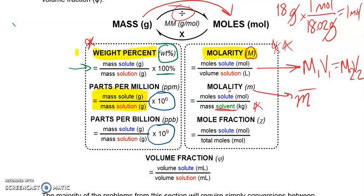The last one is mole fraction, which is very similar to weight percent and volume fraction, but instead of mass or volume, we use moles. You take the moles of solute divided by the total moles — which is just the moles of solute plus the moles of solvent. You find both moles, add them together, and that gives you a fraction. For example, 0.2 means 20% of your species by mole is your solute.